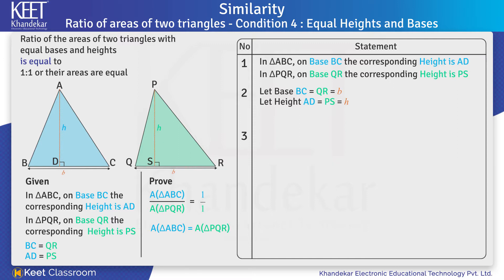Thus, we have: Area of triangle ABC equals half into base BC into height AD. On substituting B from BC and H from AD, we get area of triangle ABC equals half into B into H.